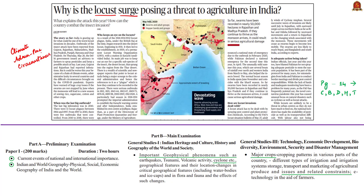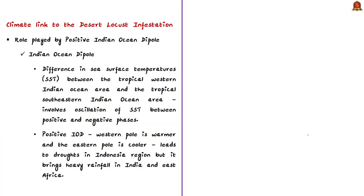We have seen in detail about locusts in our previous analysis. Today we will mainly focus on the climate link to the desert locust infestation. The syllabus relevant to the analysis of this news article is given here for your reference. The author of this FAQ article notes that the pattern of warming in the Indian Ocean might be a possible trigger for the overall development of locust swarms.